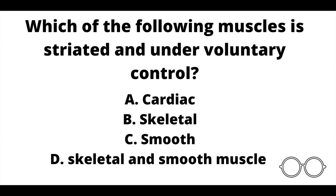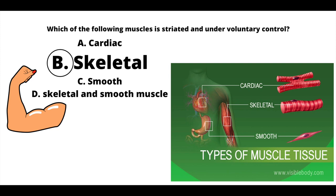Question number nine. Which of the following muscles is striated and under voluntary control? A: cardiac muscle. B: skeletal muscle. C: smooth muscle. Or D: skeletal and smooth muscle? Our answer here is B, skeletal muscle. Skeletal muscle is striated — meaning it has stripes — and it is under voluntary control, meaning we have the control to move it. When we move our skeleton and bones, our muscles move along with it: when we walk, when we pick something up, when we throw something.